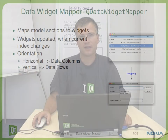The data widget mapper is a convenience class for showing data within a user form. For example, you have a model providing data where you have some persons with address and age information, and you would like to show a dialog for each person with a name, address and an age field. The data widget mapper maps the model sections to the widget, and the widgets are also updated when the current index changes.